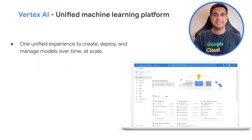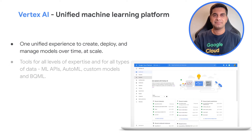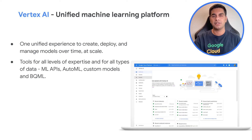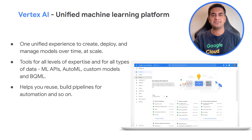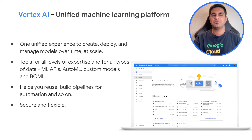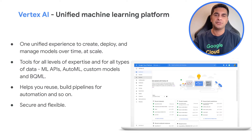Vertex AI gives you a unified experience, providing various options — ML APIs, AutoML, custom model training, and BigQuery ML — in a single place. Because it's an integrated platform, models can be reused, pipelines can be built to automate things and create a workflow, and so on. This unified platform is built on top of Google's robust, secure foundation to provide flexibility for users of all levels of ML expertise, whether you're new to ML or an expert.